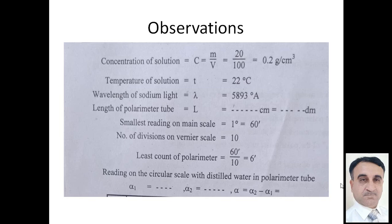Next, temperature of the solution - we normally take room temperature. Next is the wavelength of sodium light, it is 5893 angstrom. Length of polarimeter tube, that is variable, we will find its value.